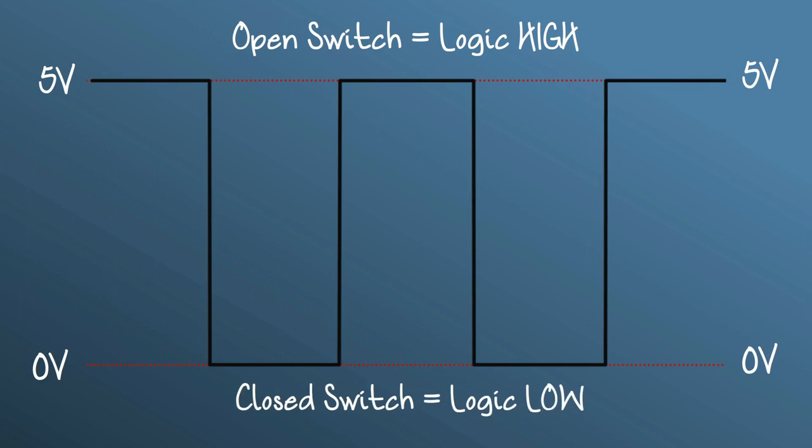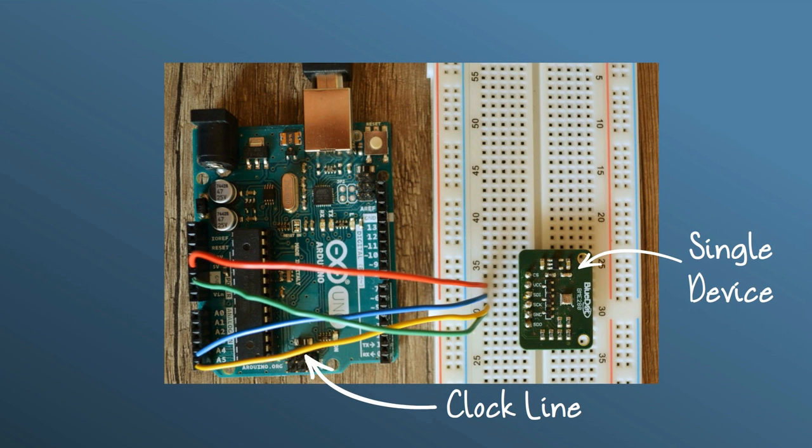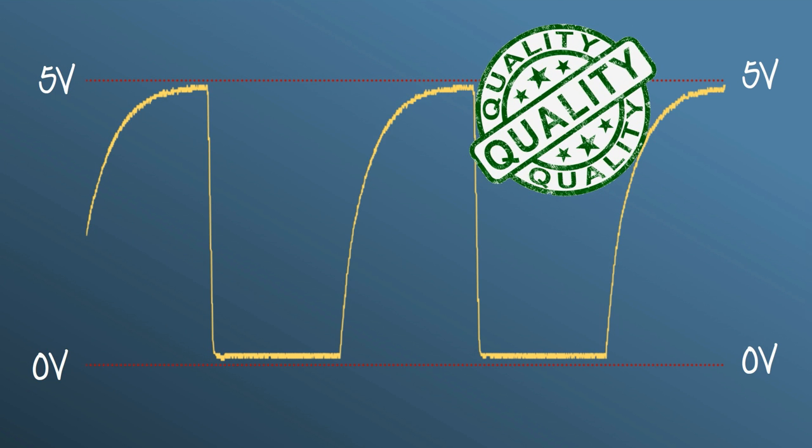Okay, so by opening and closing the switch, you get a digital signal on the clock line. Now, let's take a look at a real signal, measured from the clock line with a single device on the I2C bus. As you can see, the signal at logic low is a bit higher than 0 volt, and the signal at logic high is a bit lower than 5 volts. Also, the signal takes some time to transition from 0 volt to 5 volts. That's how a good signal on the I2C bus looks like.